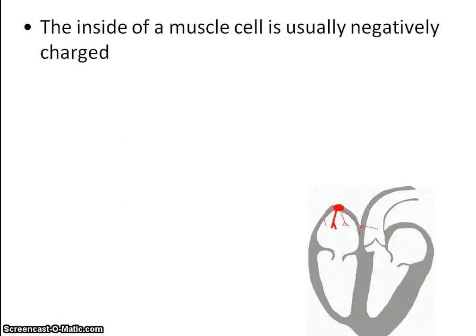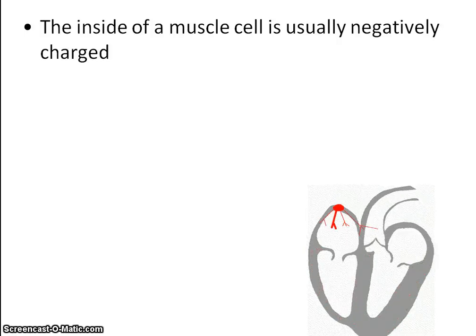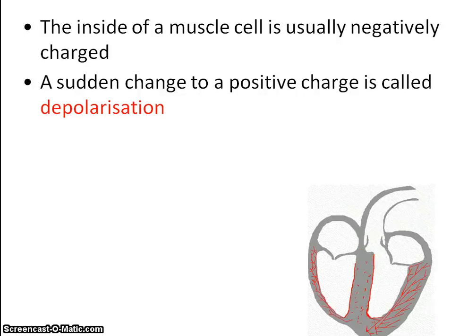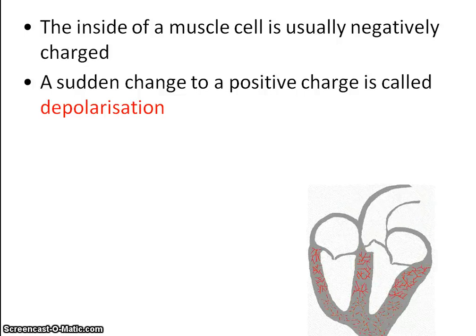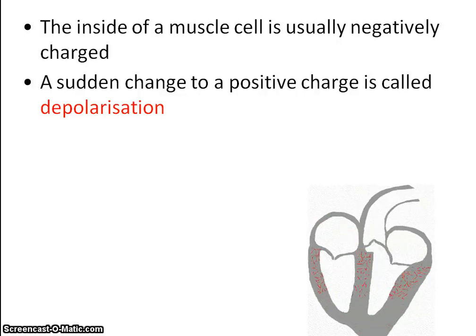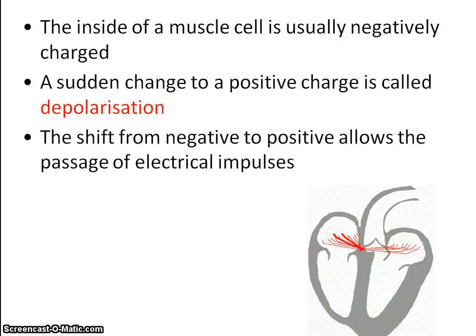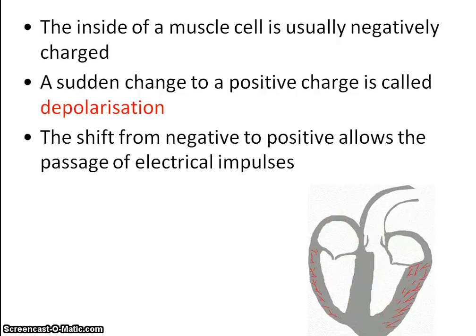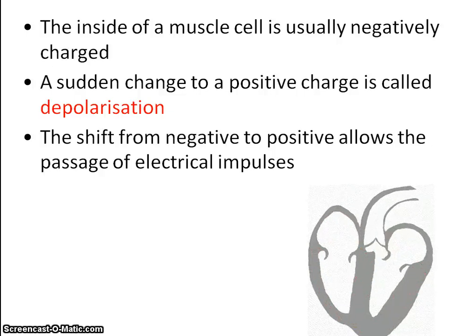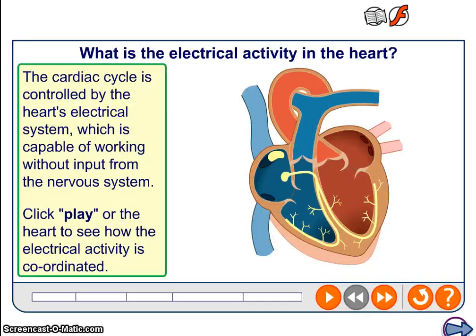A little bit of extra detail: the muscle cells are negatively charged, usually on the inside. A sudden change to a positive charge is called depolarization, but this is a term we don't need to refer to. Simply, the change from negative to positive allows the electrical impulses to pass.